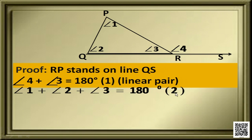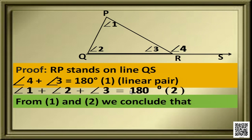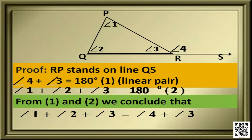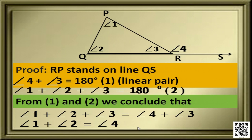Now compare these two equations. The right-hand sides are equal, so we can say the left sides are also equal. That is, angle 1 plus angle 2 plus angle 3 is equal to angle 4 plus angle 3. We have angle 3 on both sides. We can subtract angle 3 from both sides to get angle 1 plus angle 2 is equal to angle 4.